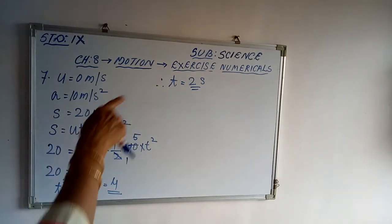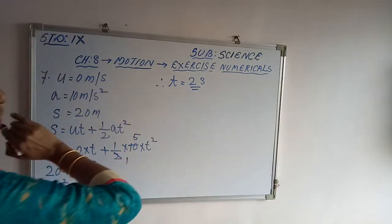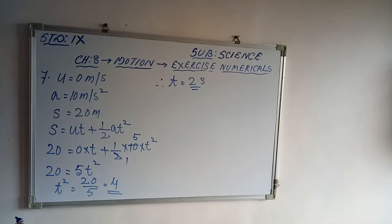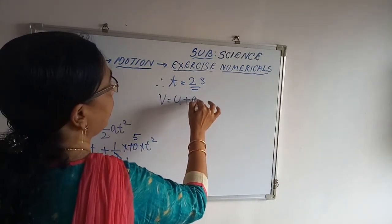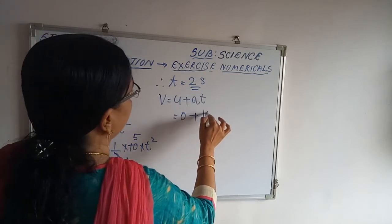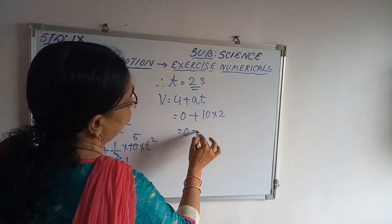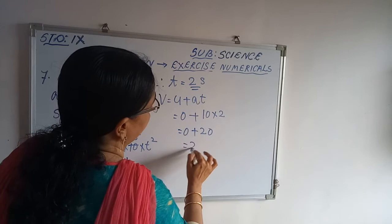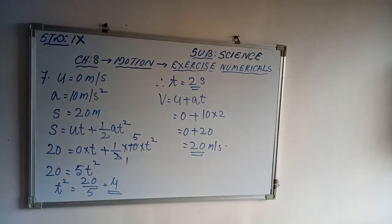Next, find the velocity using the first equation of motion: V = u + at = 0 + 10×2 = 20 meters per second.